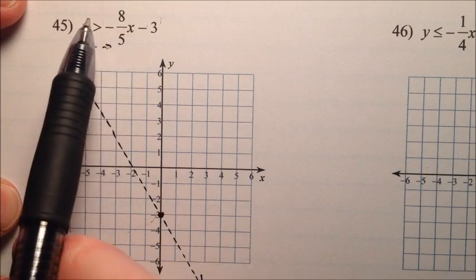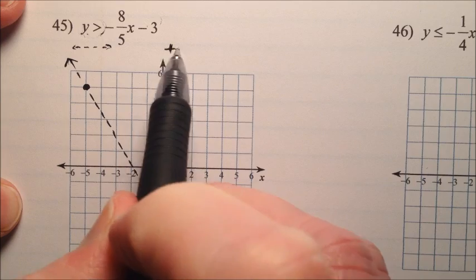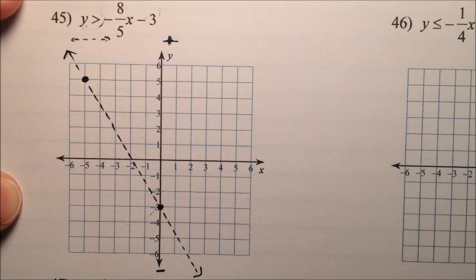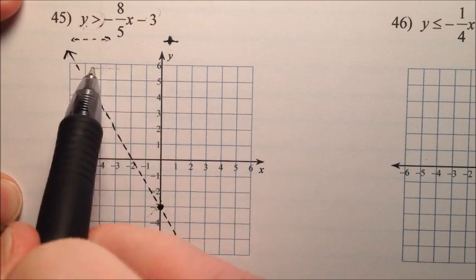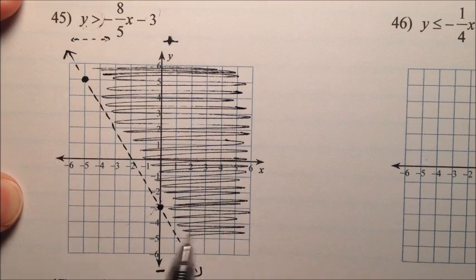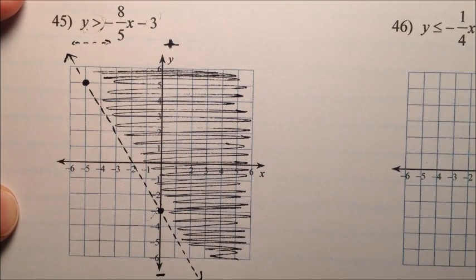And y is greater than. So here's our y axis, the greater thans are up here because these are big numbers, and the less thans are down here because they're small numbers. So we're going to do it above the line, so we'll do it up on this side. So my shading will be on the top of the line. Okay, so there's the answer to number 45.